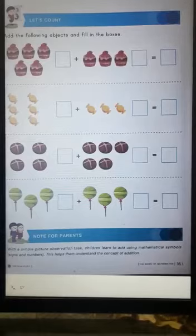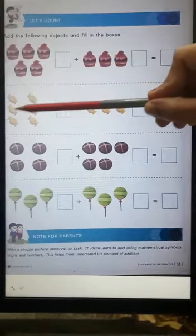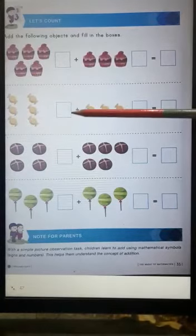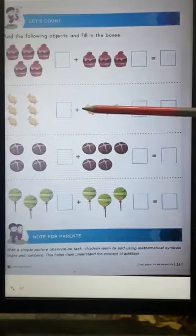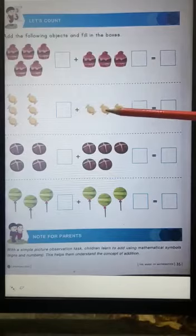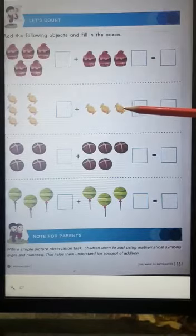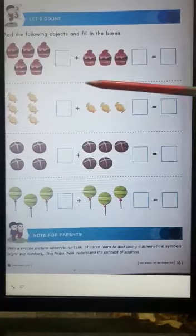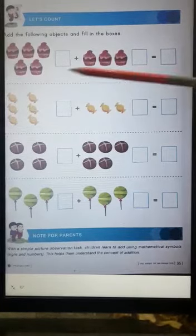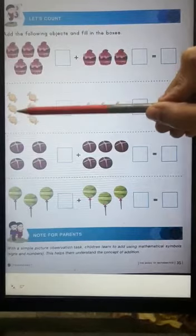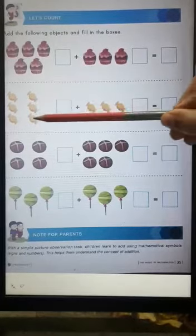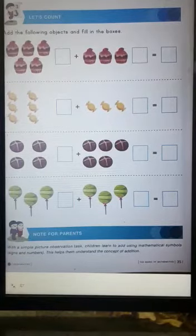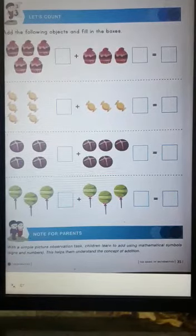Let's count the toffees now. 1, 2, 3, 4, 5, 6. So here I will write 6 in the given box. Plus. 1, 2, 3. That means we will write here number 3. Now we will add them. 1, 2, 3, 4, 5, 6, 7, 8, 9. So here I will write 9 in the given box. Are you enjoying?